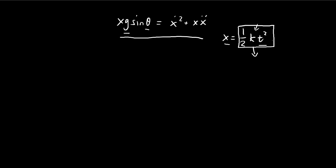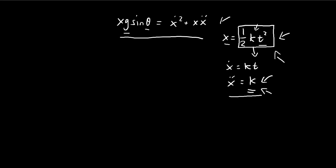Notice this actually assumes the acceleration is constant: if you take the first derivative you get kt, and the second derivative gives k. So k is actually our answer — we're trying to find the acceleration of the dustpan, and that acceleration is k. We don't know a priori that acceleration is constant, but it turns out if we substitute this solution in, everything works out — so by necessity it has to be constant. We'll substitute this into the differential equation to find k.